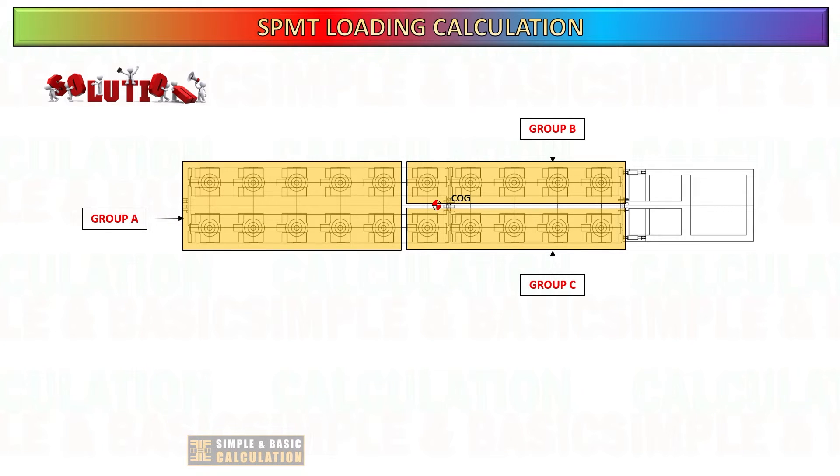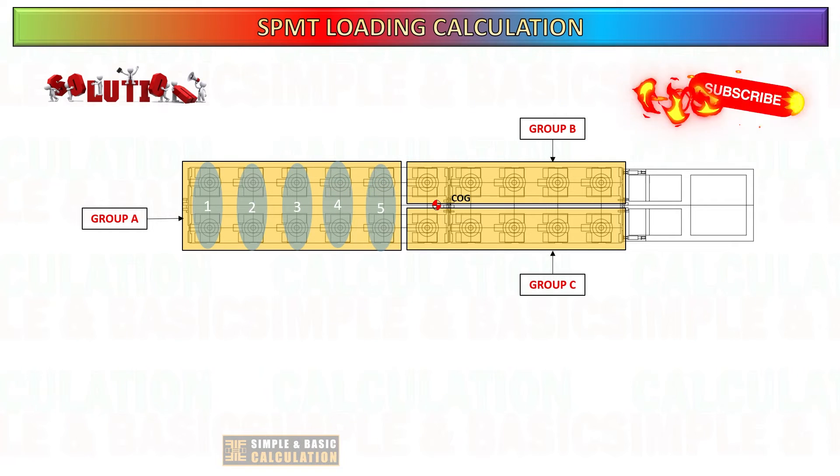Axle grouping helps maintain the stability of the load being transported by distributing the weight evenly. SPMTs minimize the risk of load shifting or tipping during transport, enhancing safety for both the cargo and the operators. There are two types of grouping combination: you can use four-point grouping and three-point grouping.